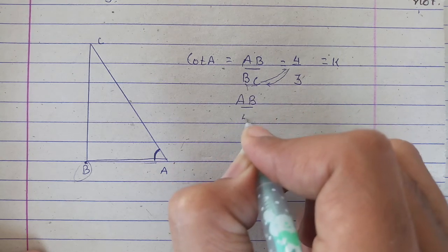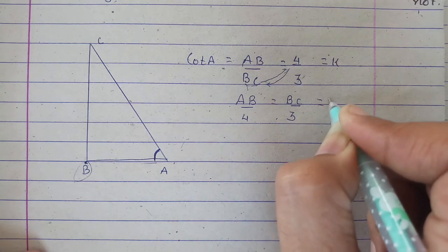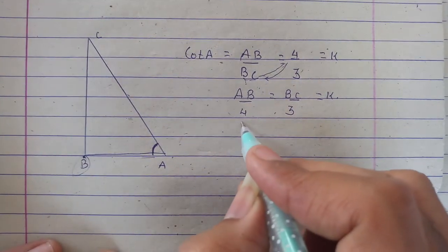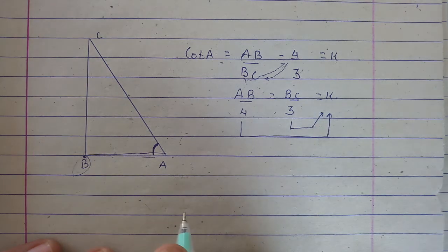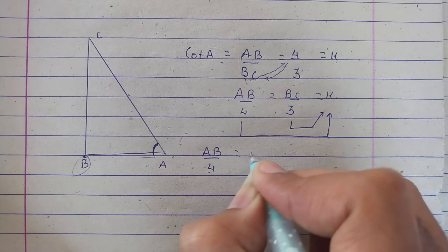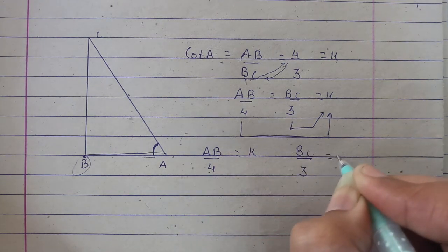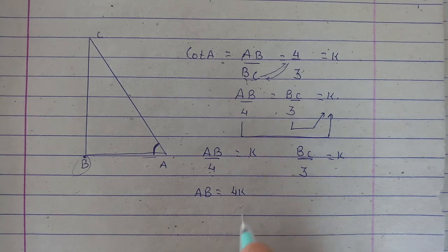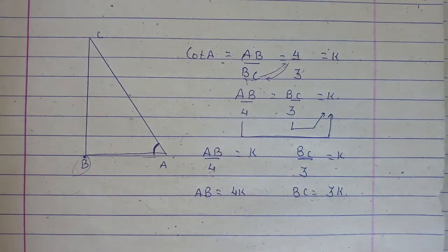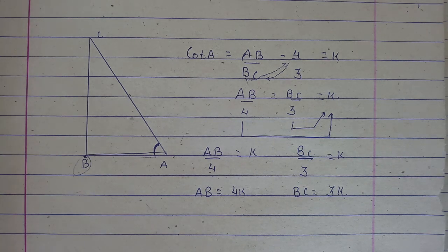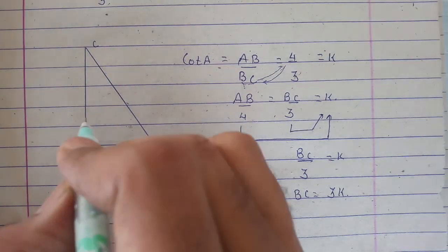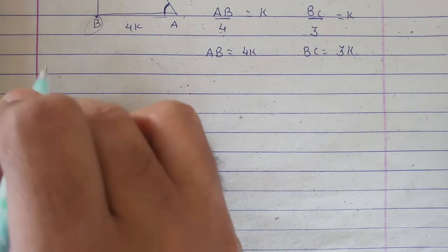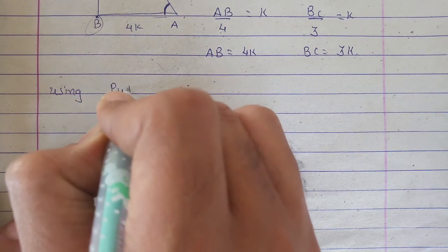So AB upon 4 is equal to BC upon 3 and that is equal to K. Now for solving this further, let us equalize these two. So AB upon 4 is equal to K, and BC upon 3 is equal to K. Now, if we multiply, AB will be equal to 4K and BC will be equal to 3K.